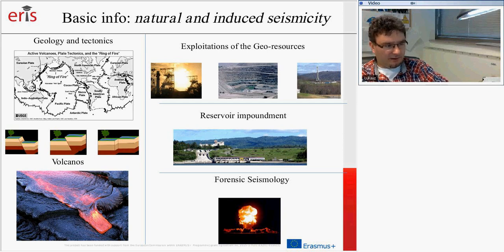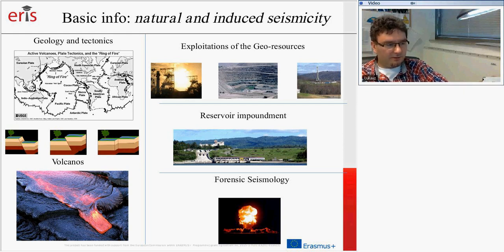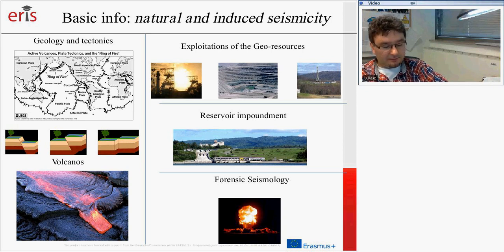From left to right we have normal faults, then in the middle a thrust or reverse fault, and on the right a strike-slip fault. Usually this strike-slip fault is somehow mixed with normal and thrust faults, and we obtain so-called oblique faults. Another example of natural seismicity is volcanic seismicity, which is always observed in volcanic areas and is a little different from tectonic seismicity.